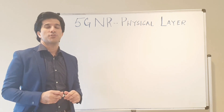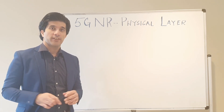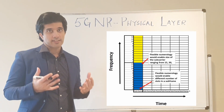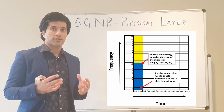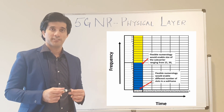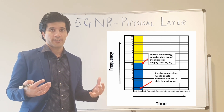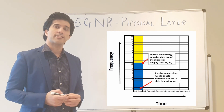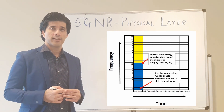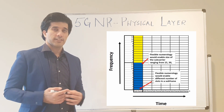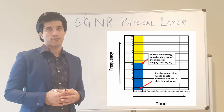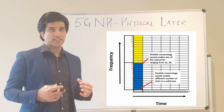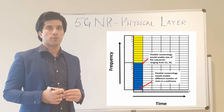Hello everybody, welcome to today's video. Our topic is 5G NR physical layer, one of the most important topics in understanding 5G NR technology. It will give you the knowledge to understand how physical channels work, how information is mapped onto the radio architecture, and how it is transmitted on your UE and eNodeB. We will discuss numerology, subcarrier spacing, time domain structure, time slot structure, and the frame structure for 5G NR, including flexible subcarrier spacing.